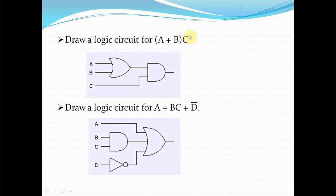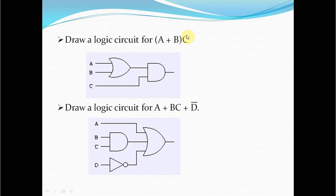Then considering the two terms: the output of the OR gate (a + b) is one input to the AND gate, and the other input is c. This AND gate produces (a + b) · c, which is the logical AND of the first term with the second term.